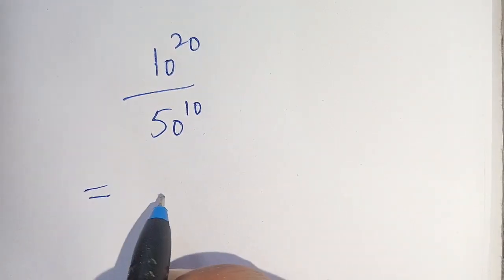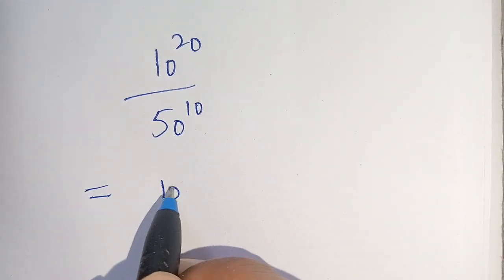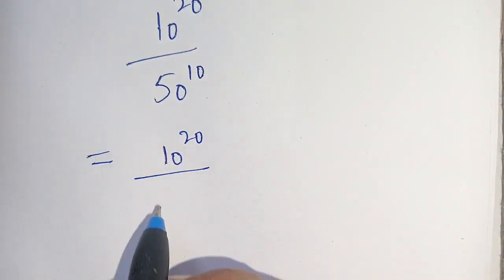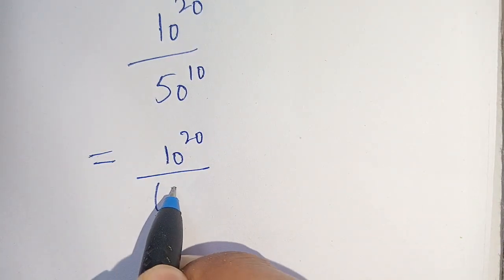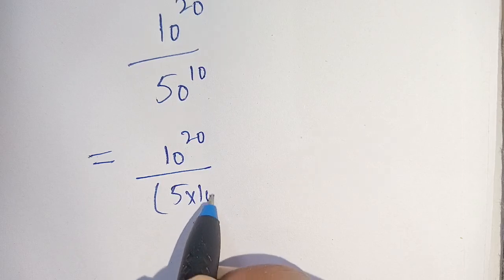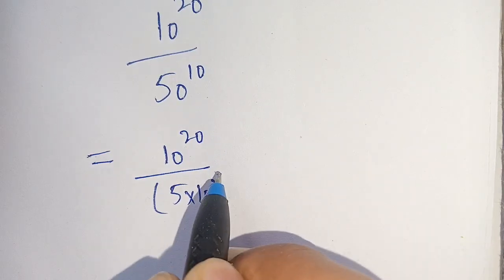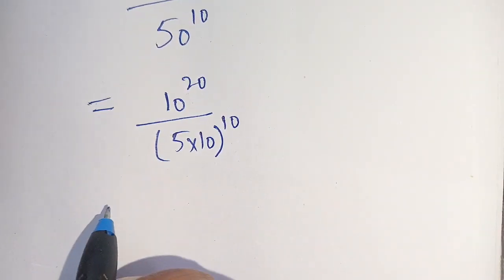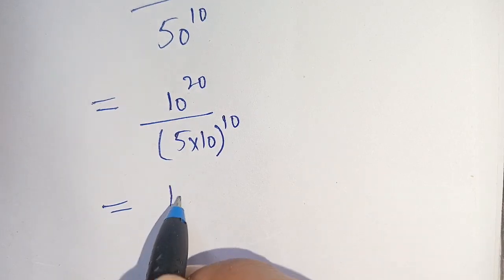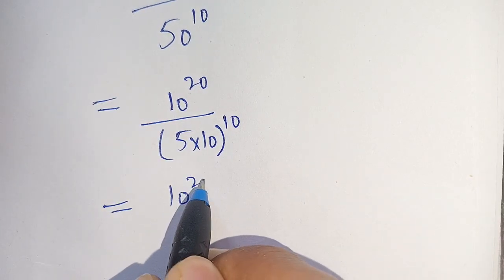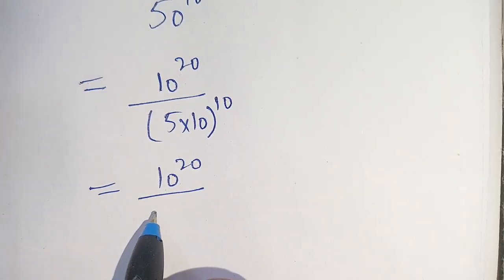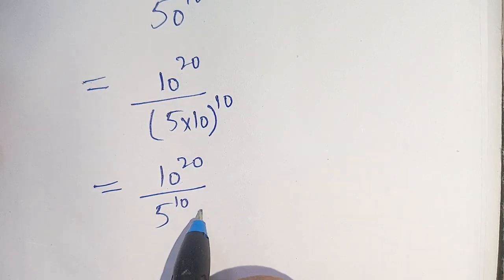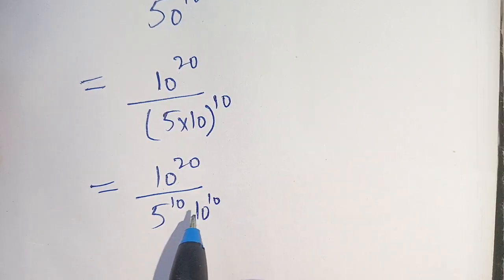We can write this as 10 raised to power 20 divided by 50, where 50 can be written as 5 times 10, all raised to power 20.